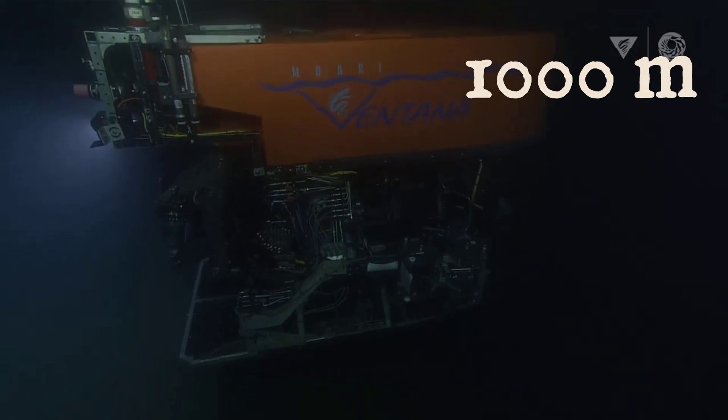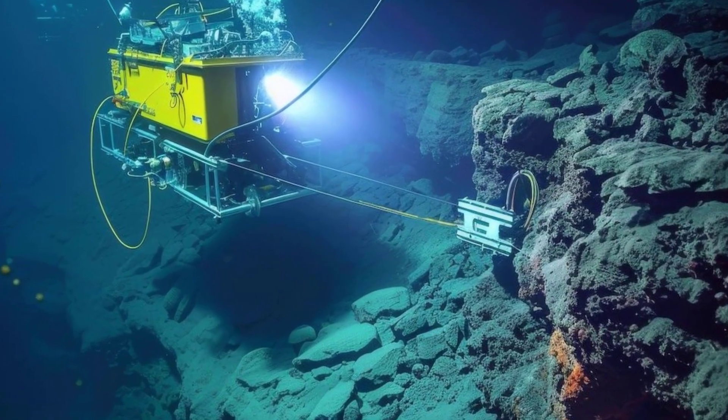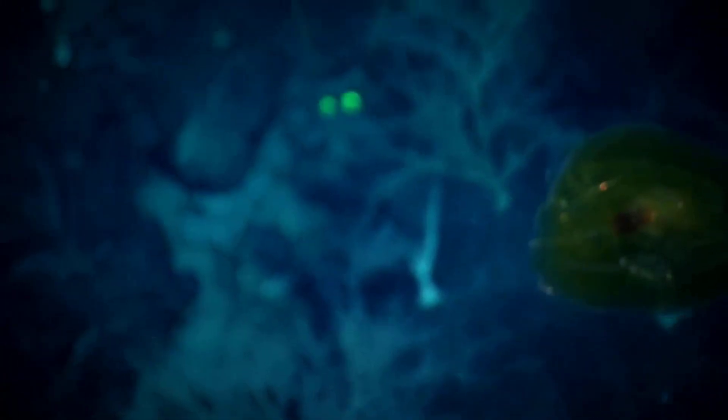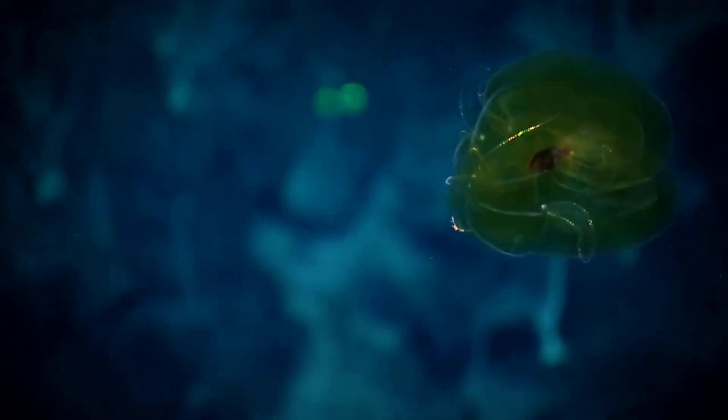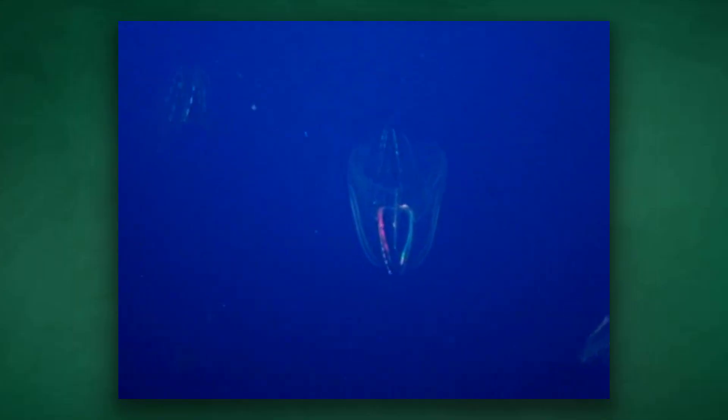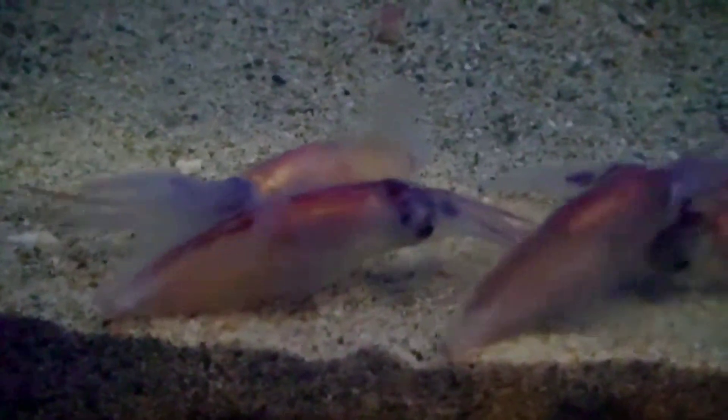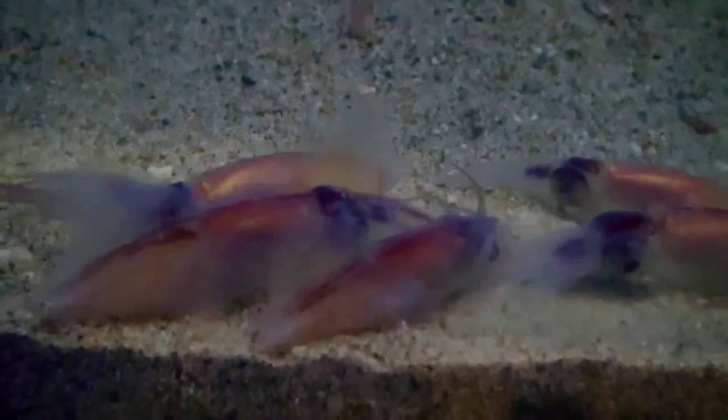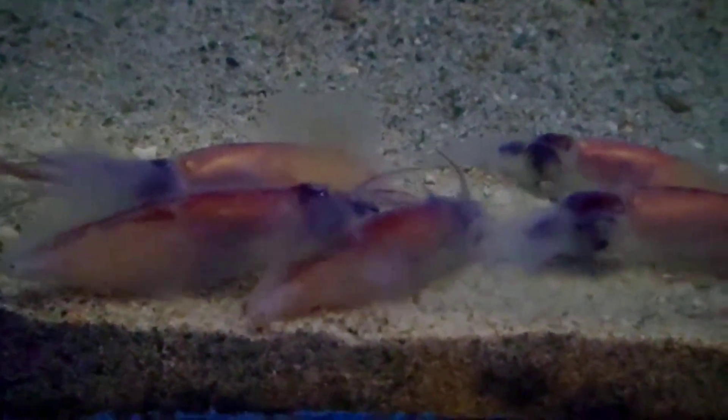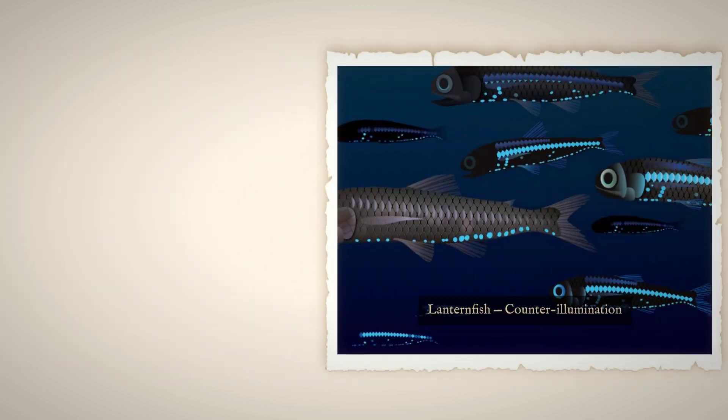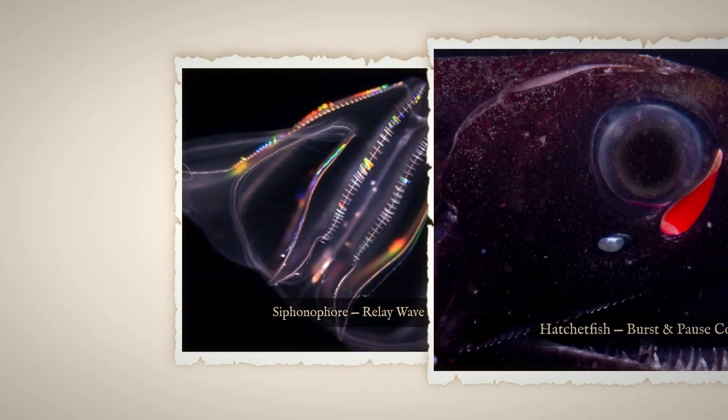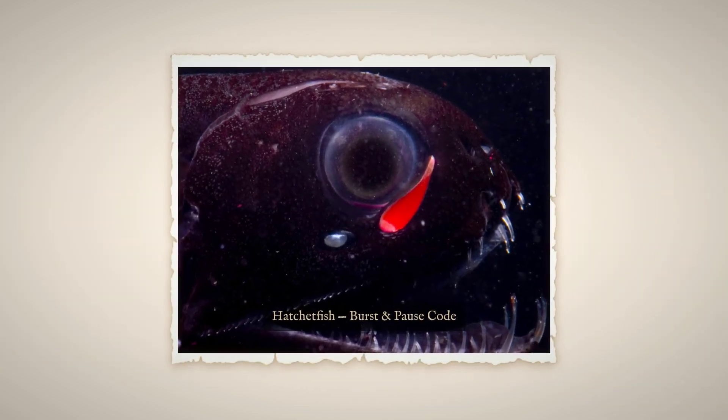Deeper still, at 1000 meters, the world enters the midnight zone. No sunlight reaches this far. Comb jellies glide through the water, their bodies lined with shimmering cilia. Some flash waves of blue-green light, confusing predators and signaling to others of their kind. Others, like the firefly squid, produce synchronized bursts of light from hundreds of photophores, creating a curtain of blue that ripples through the dark. These displays are not random. They are precise, timed and often unique to each species.